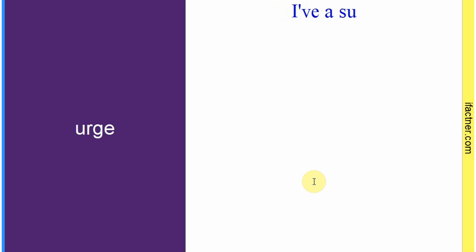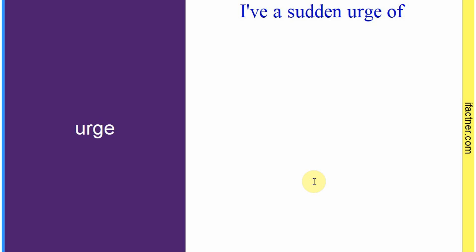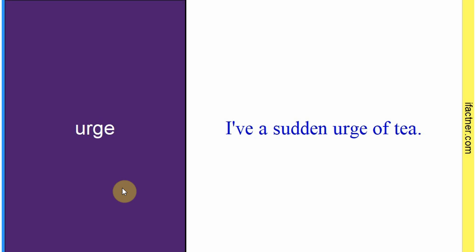Word hai: 'urge'. Sentence banaate hain meaning samajhne ke liye: 'I have a sudden urge of tea.' Mujhe ik dam chai peene ka dil chah raha hai. Toh 'urge' hoti hai jo hamara dil chahta hai — urge hoti hai chocolate khane ki, meetha khane ki — ik dam jo bhi aaye khaaye jaaye. Sentence banaaya: 'I have a sudden urge of tea.'